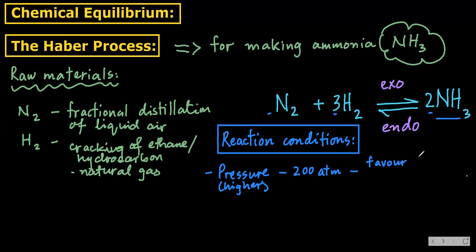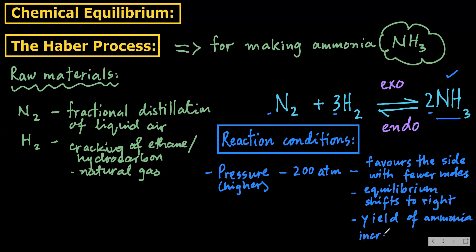the side with fewer moles. So it favors the ammonia side. What happens? The equilibrium shifts to the right. This is how we need to explain in the exam. When equilibrium shifts to the right, the yield of ammonia increases, which is what we want.